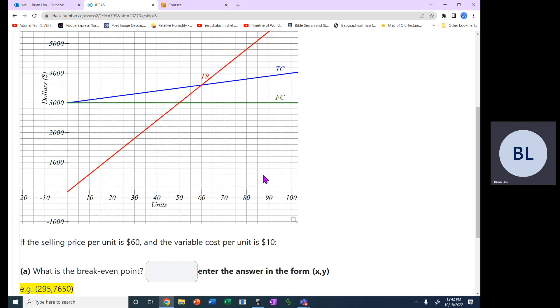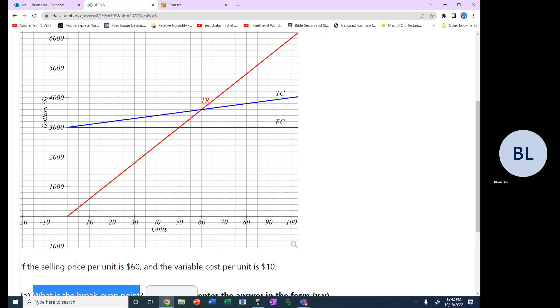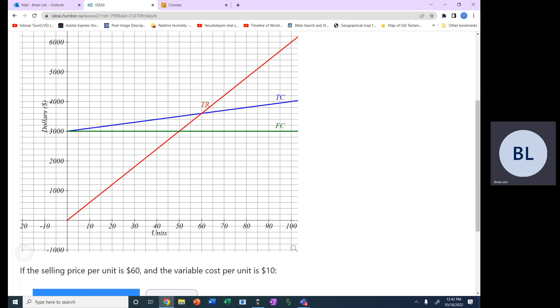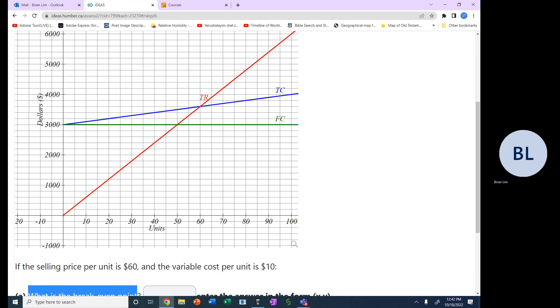Now we're given the selling price is $60, variable cost per unit is $10. What is the breakeven point? So how do we find that looking at the graph? The breakeven point is right here, the intersection of this total cost function and the total revenue function, right?